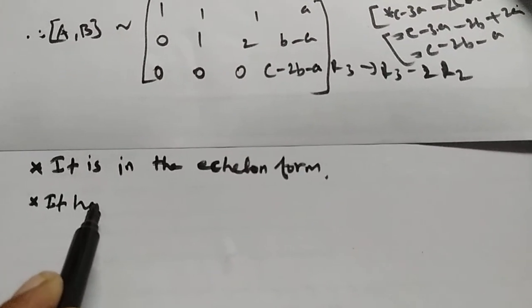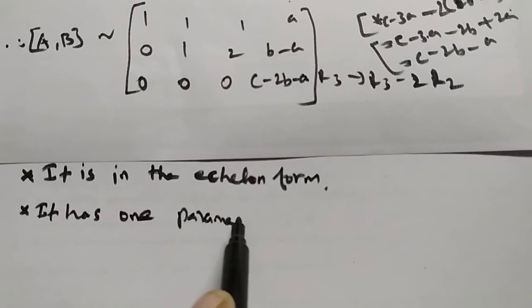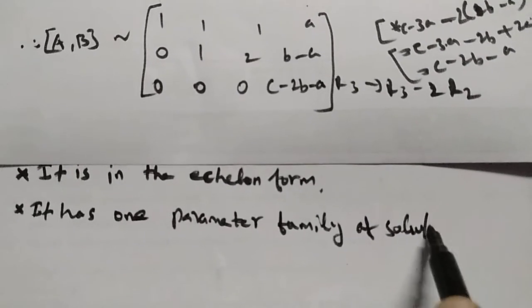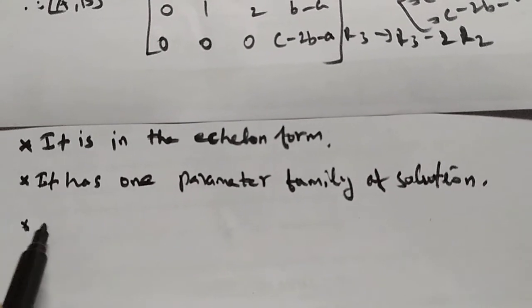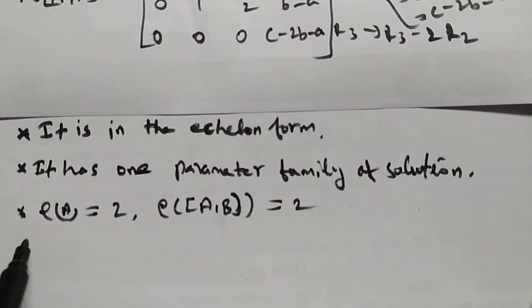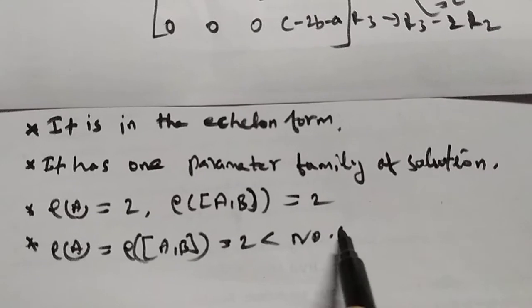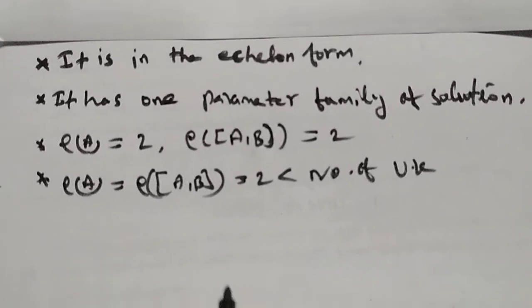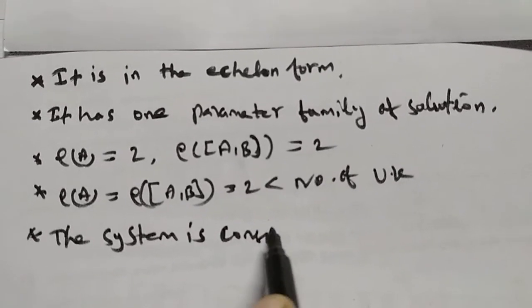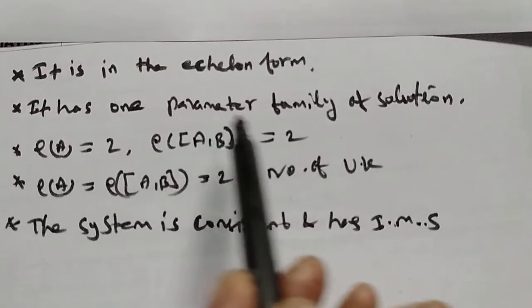For it to have one parameter family of solution: rho of A equals 2, rho of [A|B] equals 2. Since rho of A equals 2, which is less than the number of unknowns, the given system is consistent and has infinitely many solutions.